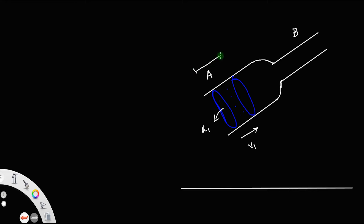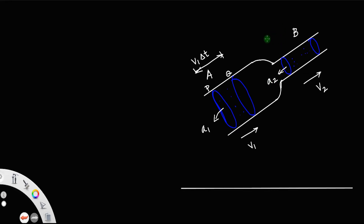The length of the fluid element will be equal to velocity into time. Let us call that as PQ, so the length PQ is equal to V1 delta T. Now the fluid will flow through section B, where the velocity of the fluid is V2 and the area of cross section is A2. Then this length is equal to V2 times delta T.